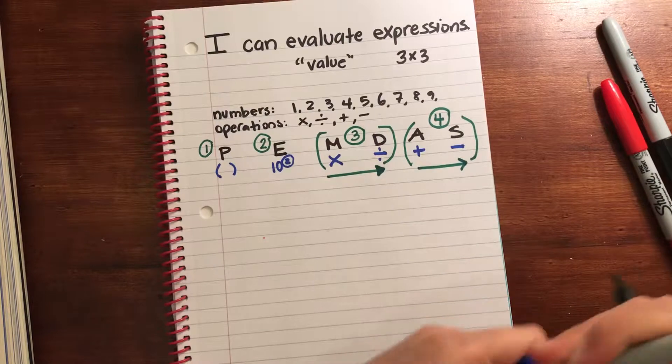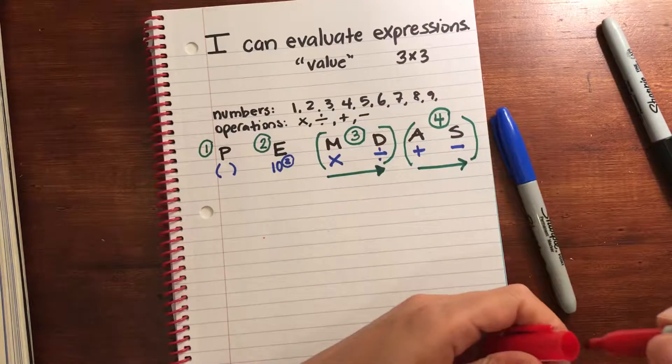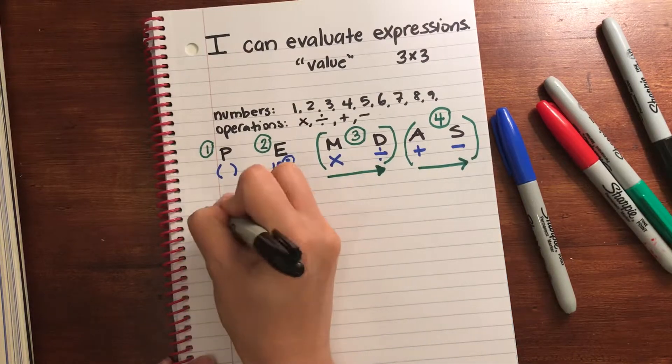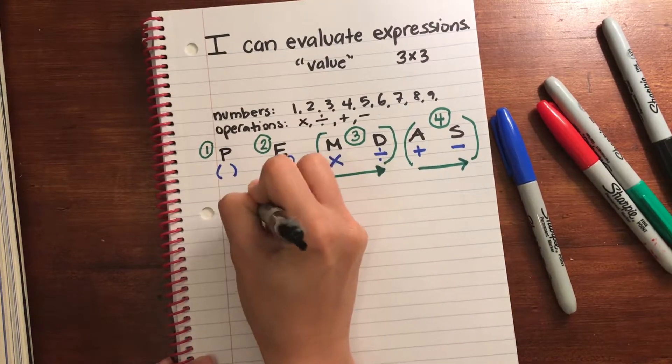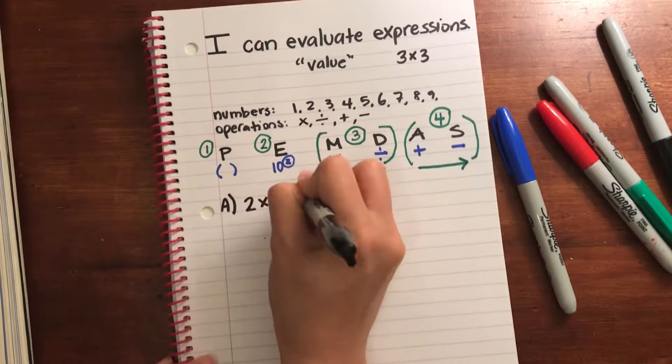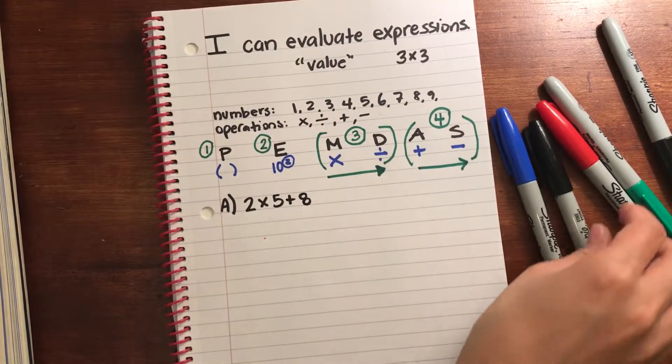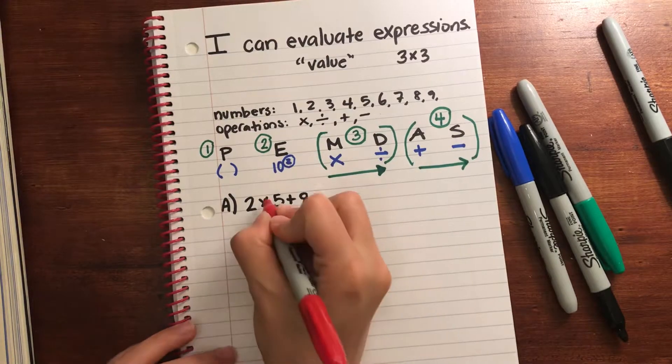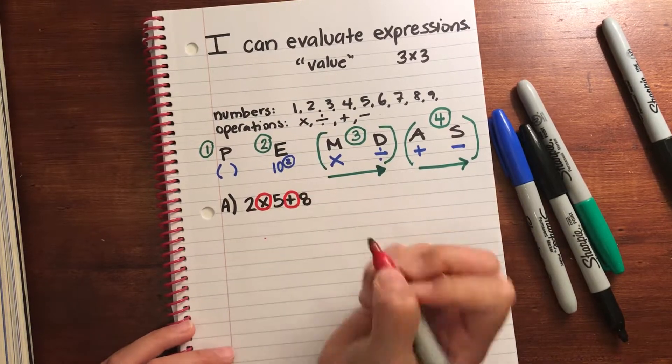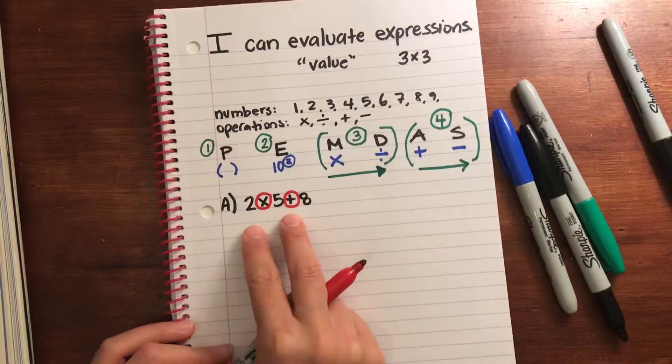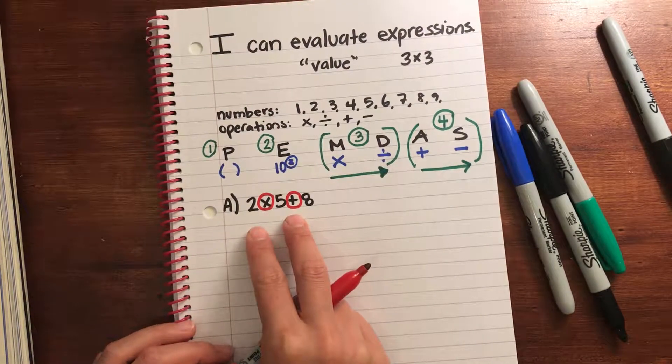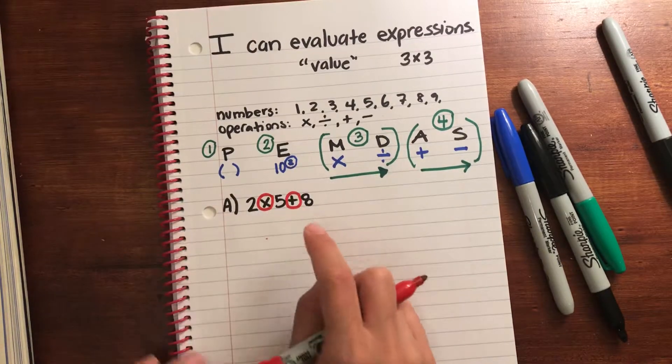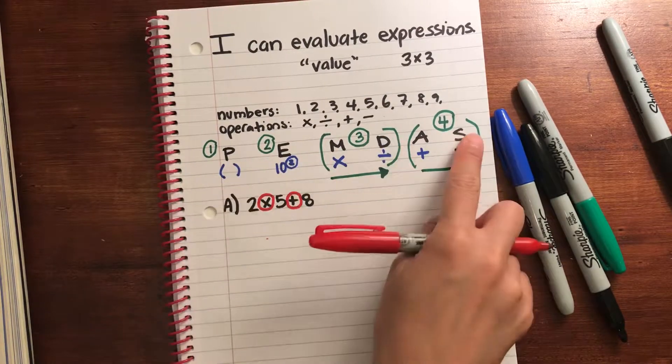Okay, let's do some examples. Let's look at A first, and we'll get a simple problem, or expression. 2 times 5 plus 8. So whenever I solve a order of operations, one thing I always like my students to do is to find the operations. So I have multiplication and addition.